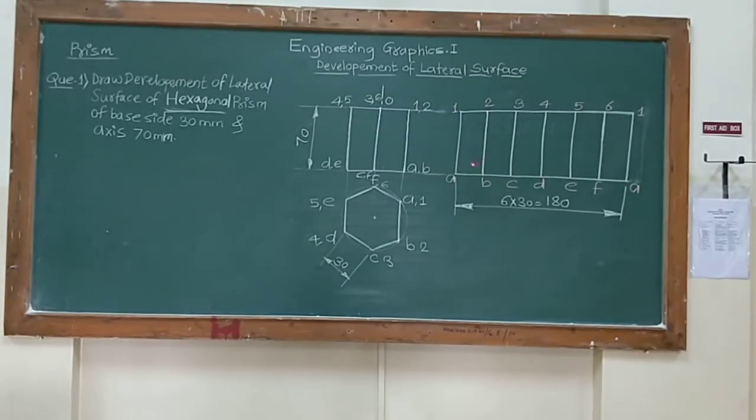As it is a hexagonal prism, you will see total 6 faces, namely a b c d, last face as a 1.